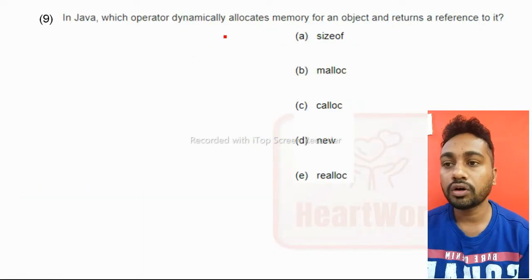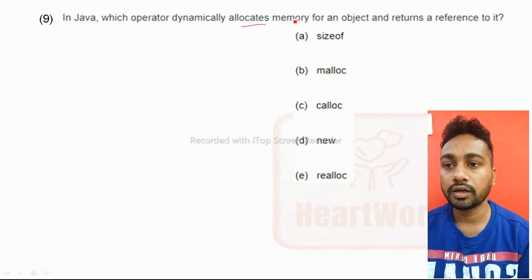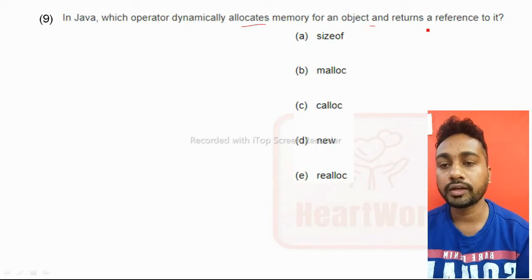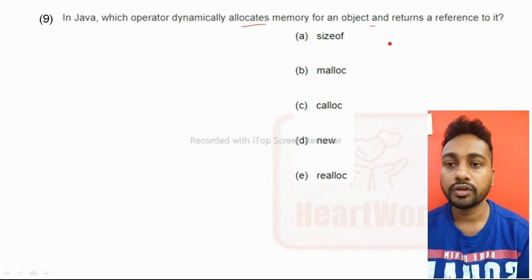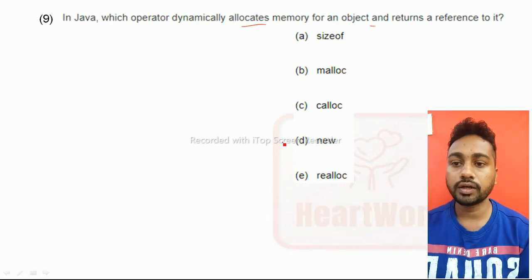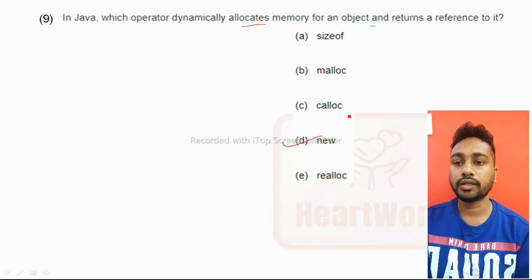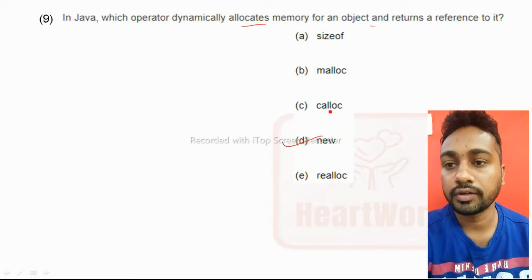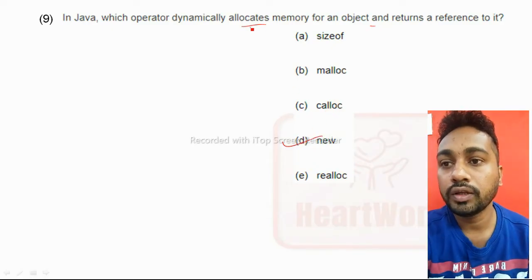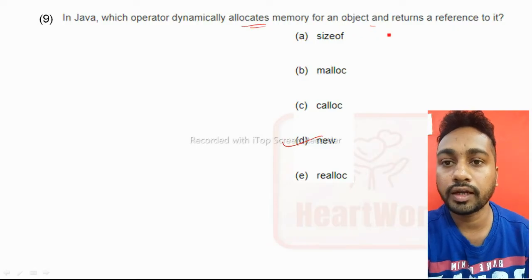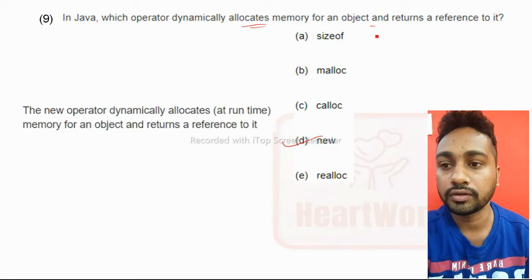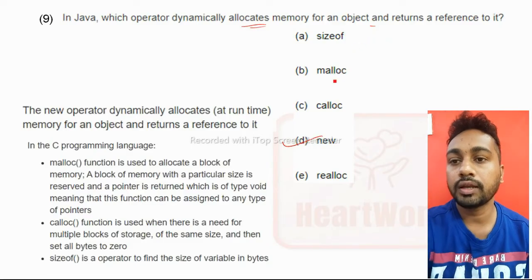In Java, which operator dynamically allocates memory for an object and returns a reference to it? This is new, option D is the right answer. This is the operator who will allocate memory for an object and return a reference to it.